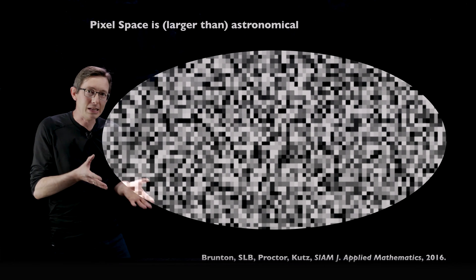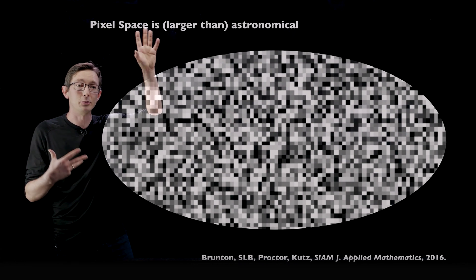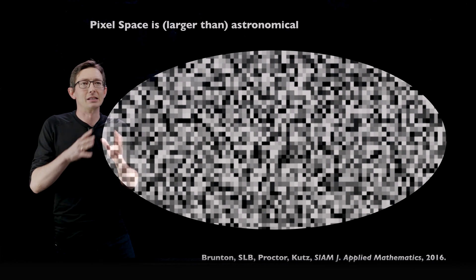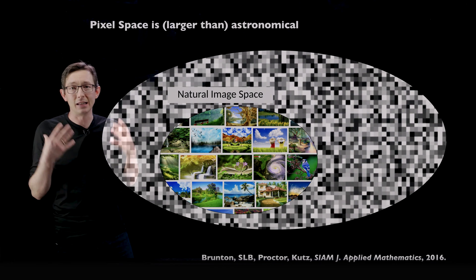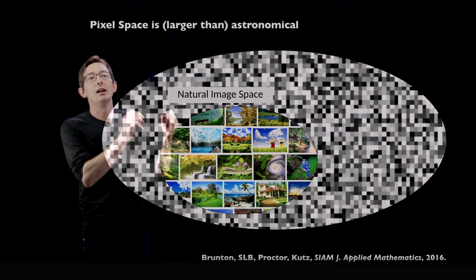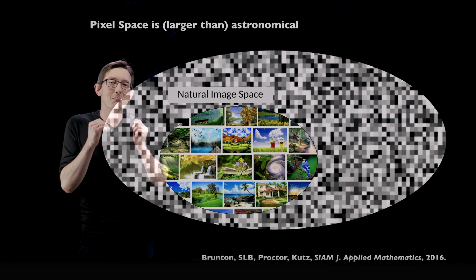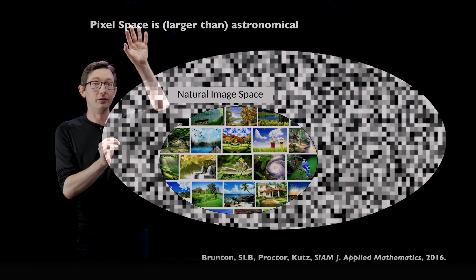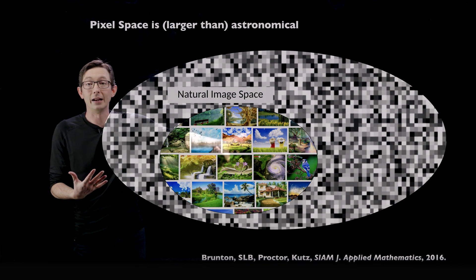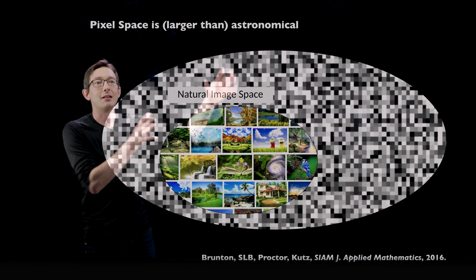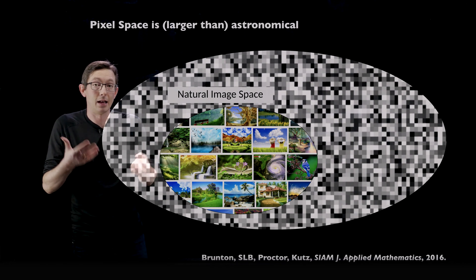We've seen this picture before. The reason compressed sensing works in general is because pixel space — the space of possible signals — is absolutely astronomical. Natural images, the images that we as humans care about, live in a tiny, tiny fraction of image space. Even though image space itself is unimaginably large, natural images occupy a minuscule, almost unimaginably small fraction of it. All of your human existence and everything you could ever see lives here, but it's still tiny compared to the vastness of image space.